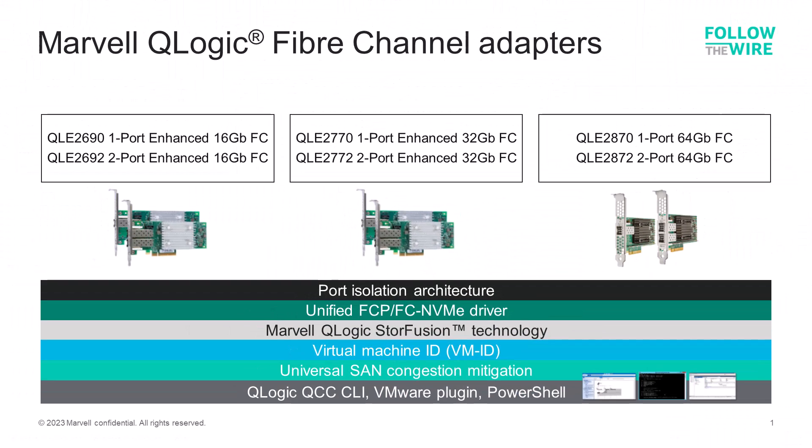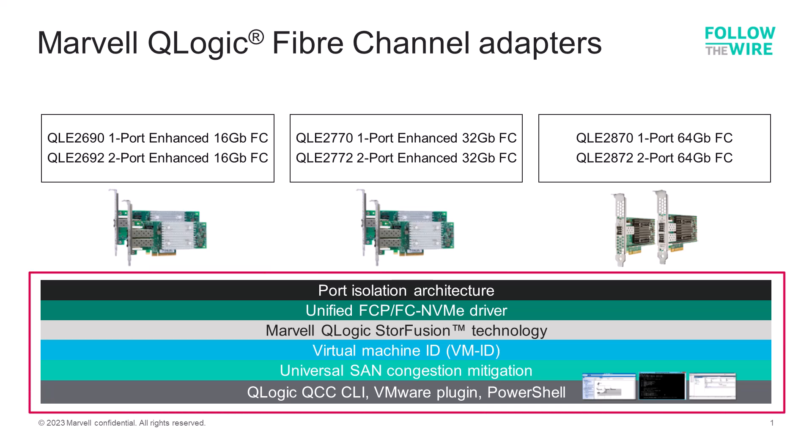Here's the portfolio of Fiber Channel adapters from QLogic. The QLE 2690 series are our 16-gigabit Fiber Channel HPAs. The QLE 2770 series is the enhanced 32-gig, or second-generation 32-gig, Fiber Channel HPAs. And the latest in the portfolio is the QLE 2870 series, which are our first-generation 64-gig Fiber Channel HPAs. All of these support the variety of features listed at the bottom of this slide, and all these features work with both Brocade and Cisco Fiber Channel SAN switches and directors.